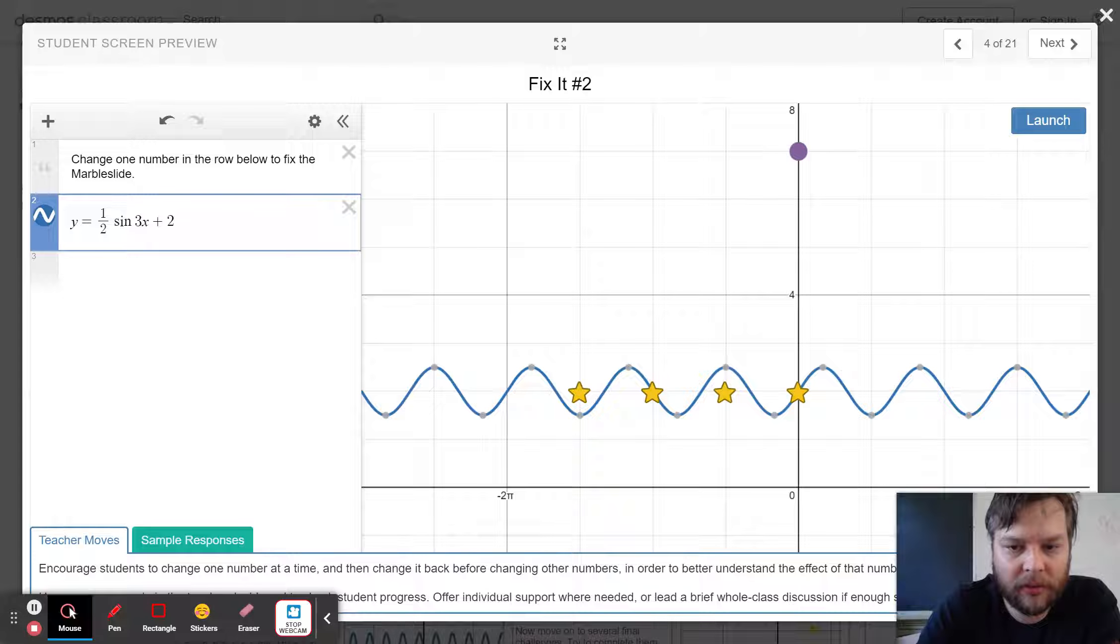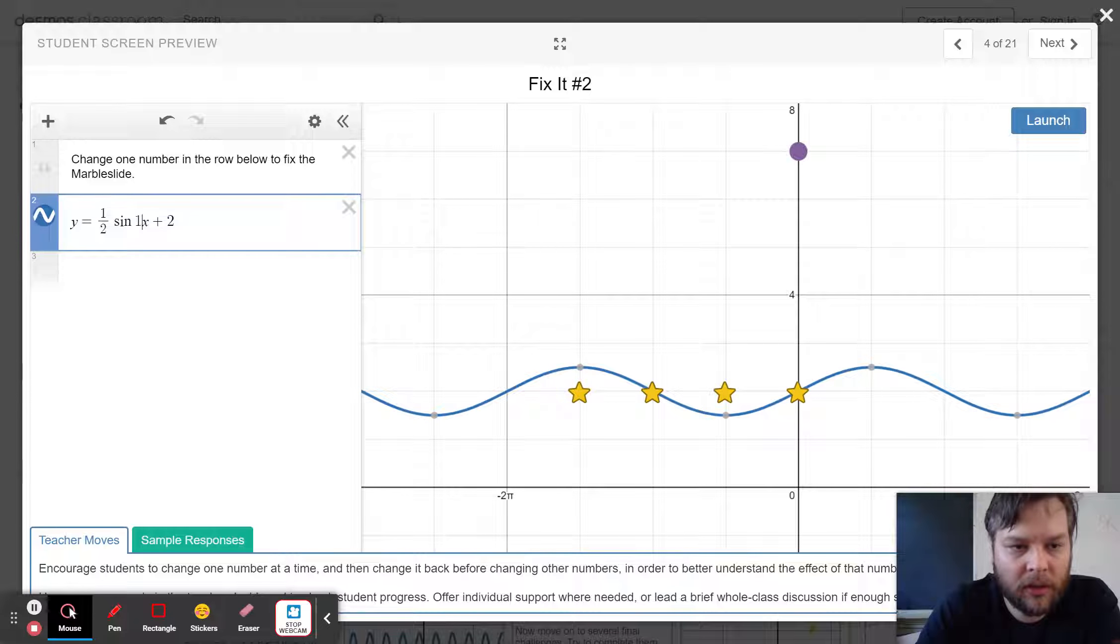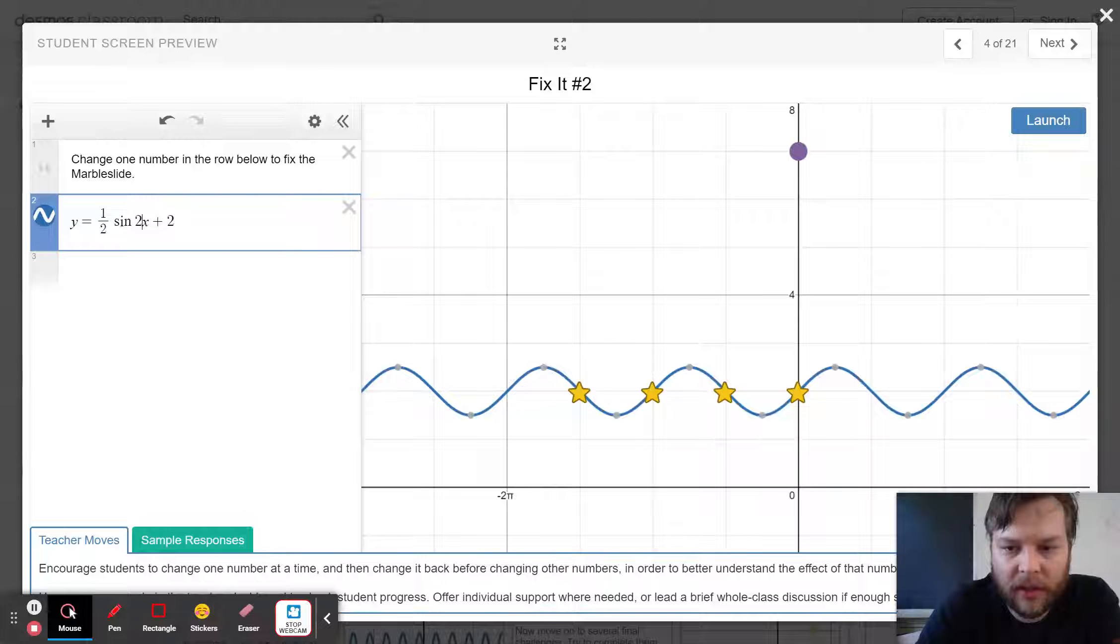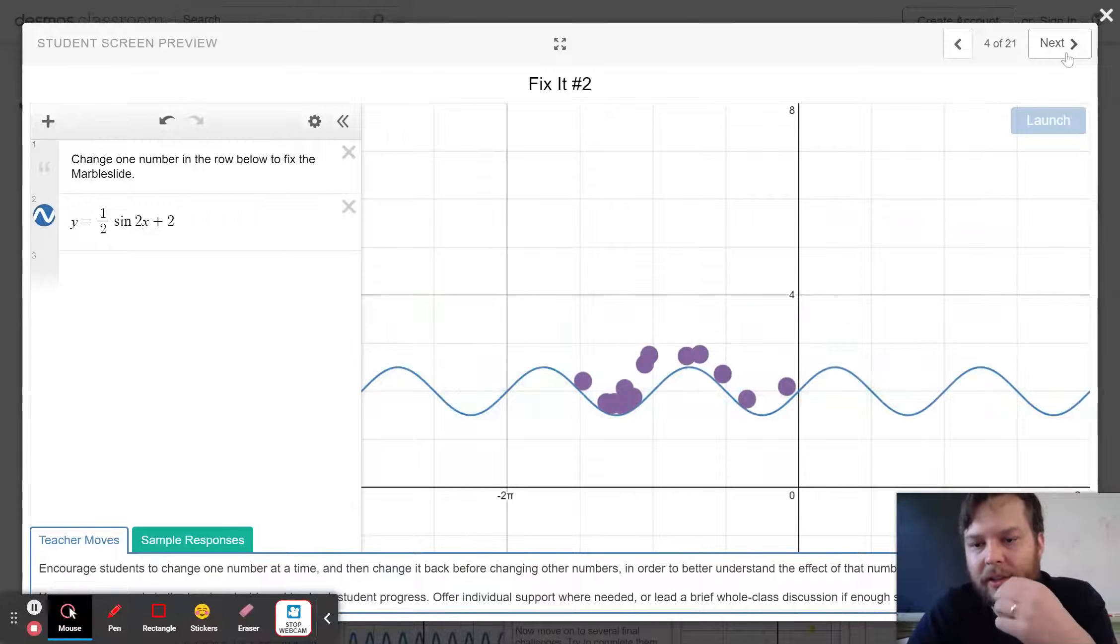So two didn't actually work. I wonder if 2.5. Let's give it one more shot because it looks like I'm hitting all the stars with my graph. There we go. Sometimes those marbles are a little weird.